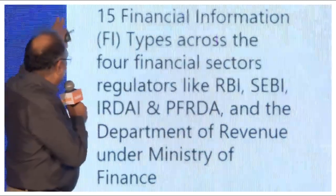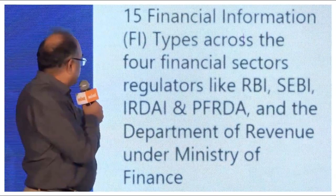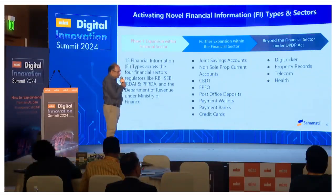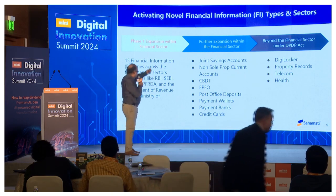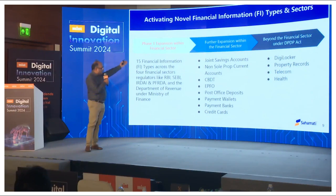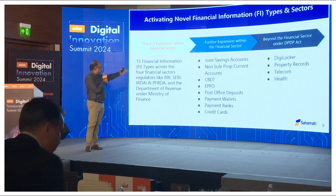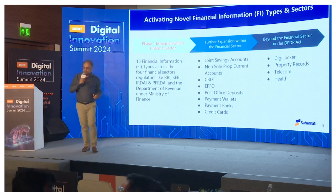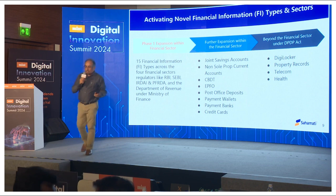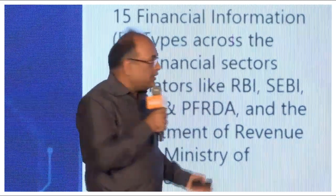Currently, the financial types available are the ones I explained — the bank accounts, etc. And you will see here that joint accounts, income tax, provident fund, and all these kinds of data will also go live on AA.